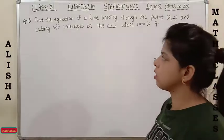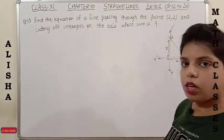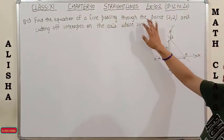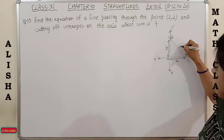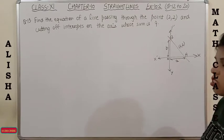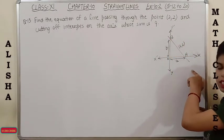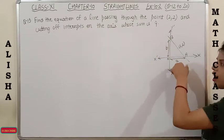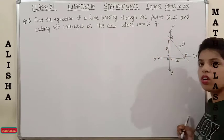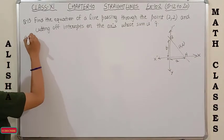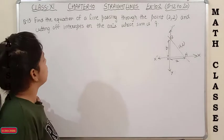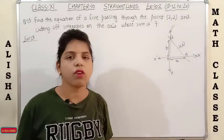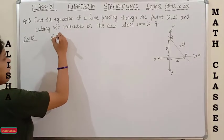Question 13: Find the equation of a line passing through the point (2, 2) and cutting intercepts on the axes whose sum is 9. The line cuts the coordinate axes making intercepts a and b where a + b = 9. Whenever the intercept form is involved, we use x/a + y/b = 1.